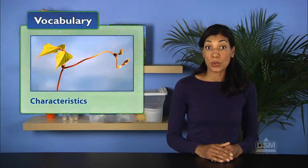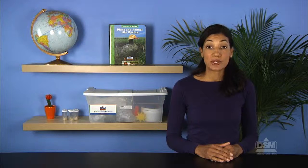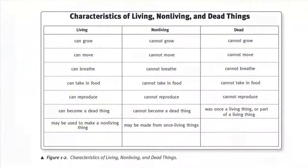Guide students to understand that looking at the characteristics or traits each thing possesses is the best way to distinguish between life cycles. Display the Characteristics of Living, Nonliving, and Dead Things chart, and point out that living, nonliving, and dead things have different traits or characteristics.